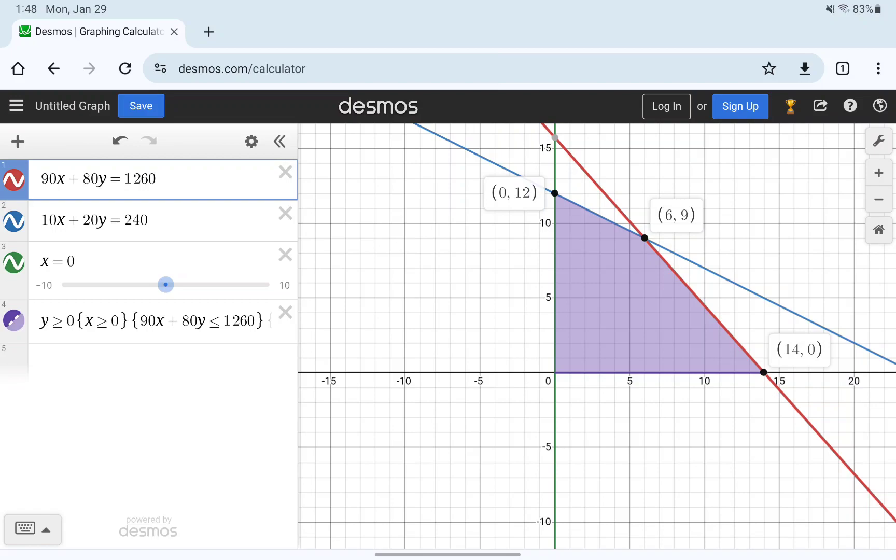Keep in mind if any of those values weren't whole numbers, we would want to round those down to the nearest integer because we can't make a fraction of a bar. We either make a bar of candy or we don't.